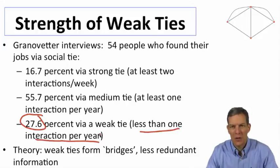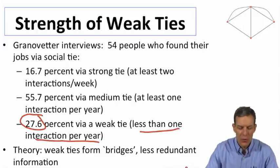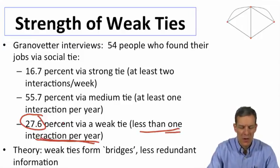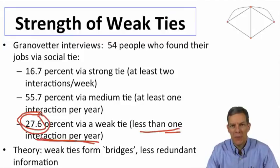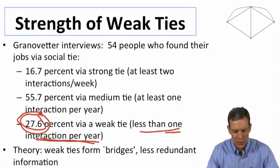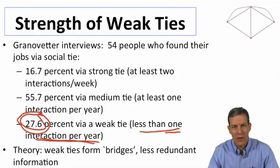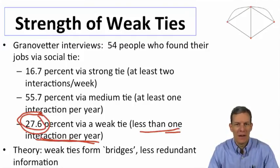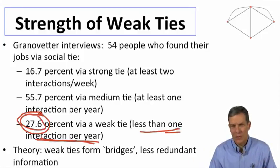What Granovetter was pointing out was that even though these are very weak ties — where you don't have much interaction with these individuals at all — they still accounted for a fairly large share: more than a quarter of the information about jobs that people were getting in terms of how they managed to find employment. This has led to a lot of follow-up research, and understanding when weak ties are important and how important they are is a large subject.